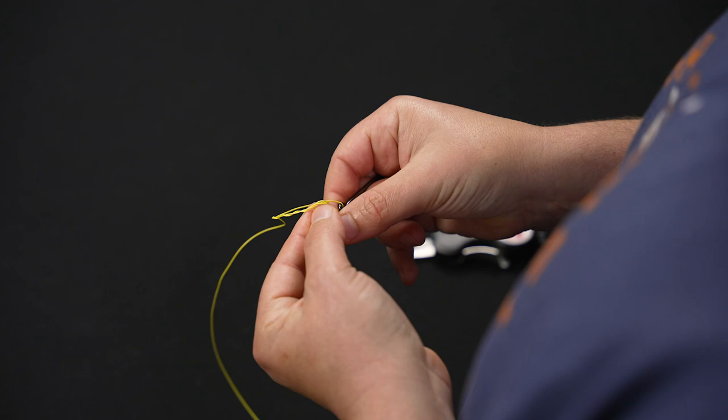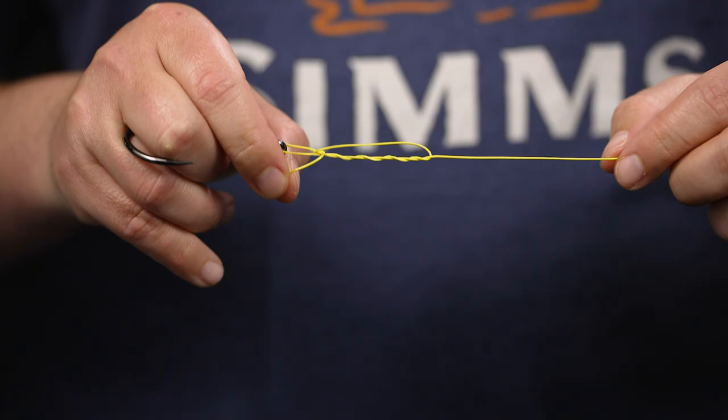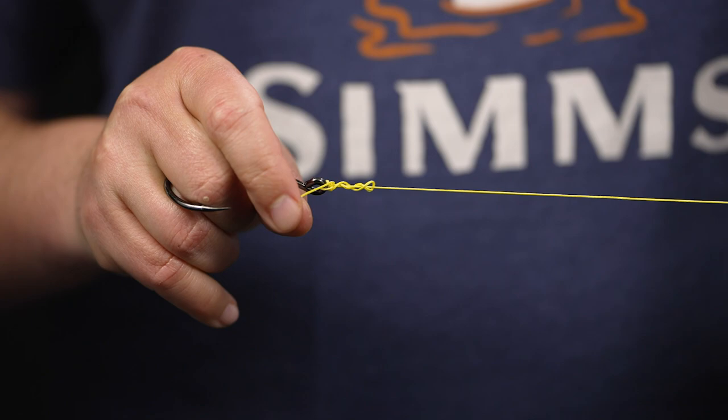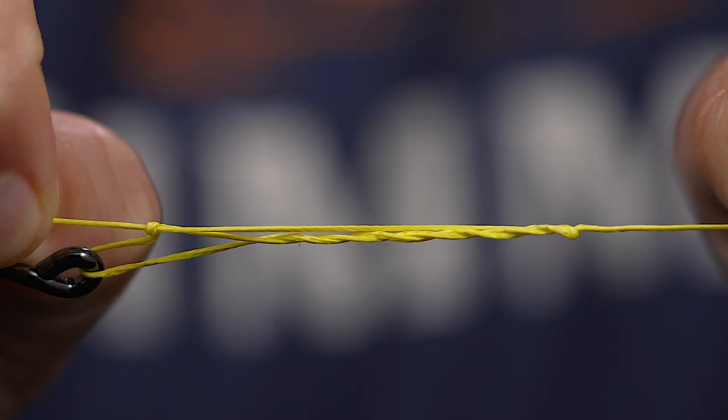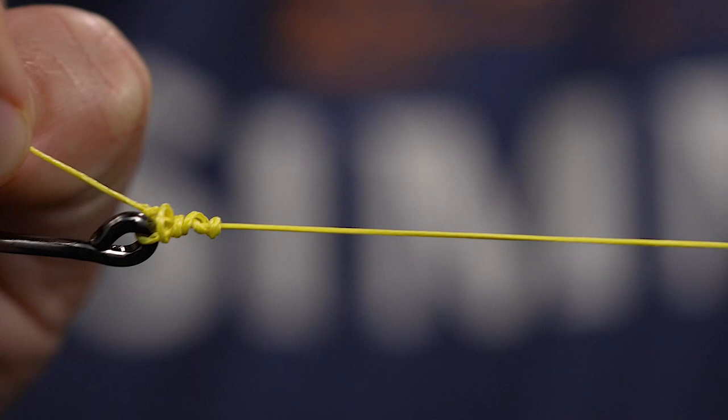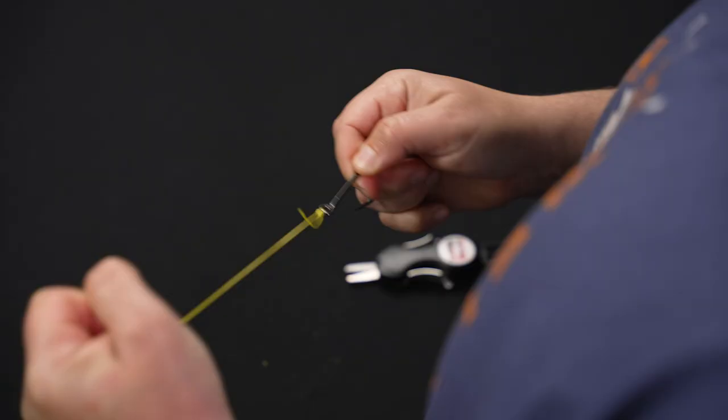Now the last step is just going to be cinching the knot down by pulling the main line, not the tag end, and you're going to slowly pull that knot down and tighten it down. And you're going to wet the knot at this point as well to make sure that you don't burn the knot. Pull it tight and you're all done.